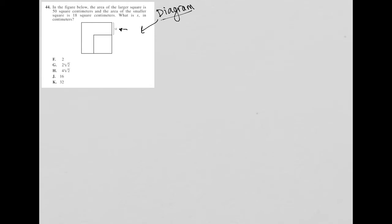These look like squares, but let's just make sure. So in the figure below, the area of the larger square is 50 square centimeters. OK, so when I'm dealing with a diagram question, as soon as I read some quantitative information that relates to that diagram, I want to pause and label my diagram.